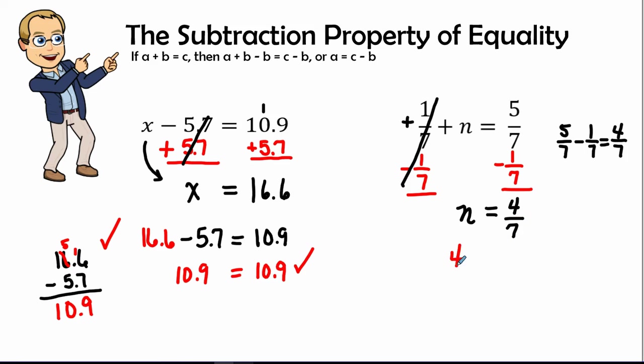Let's plug that into the equation. We have 4/7 for the variable n, and we're going to add 1/7, which should equal 5/7.